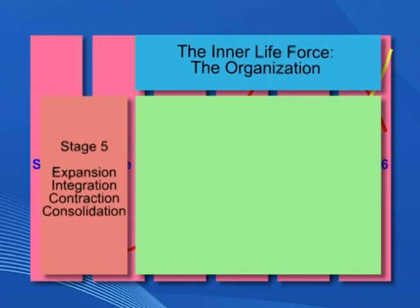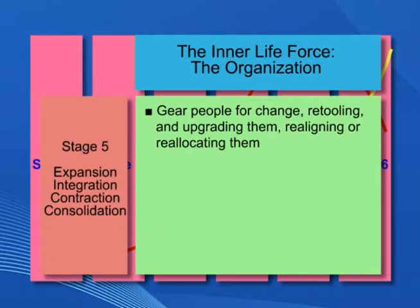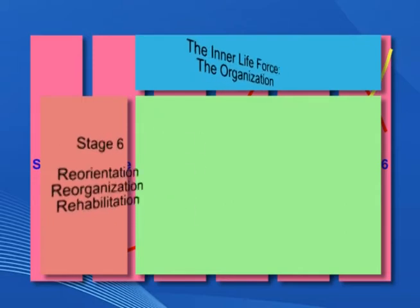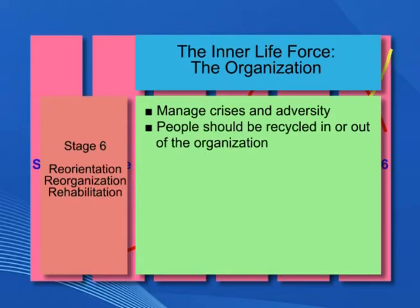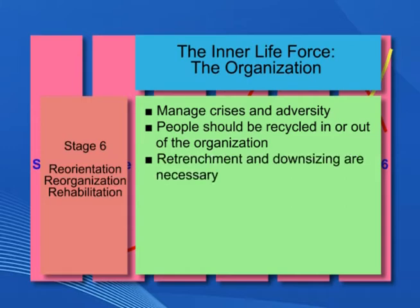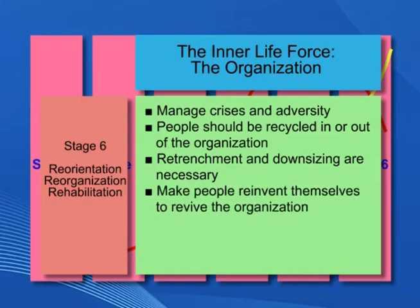At the expansion or contraction stage, there is a need to gear people for change, retooling and upgrading them, realigning or reallocating them. Finally, at the last stage, the inner life force must be able to manage crises and adversity. If need be, people should be recycled in or out of the organization. Retrenchment and downsizing are necessary evils at this stage. The idea is to make people reinvent themselves in order to revive the organization.